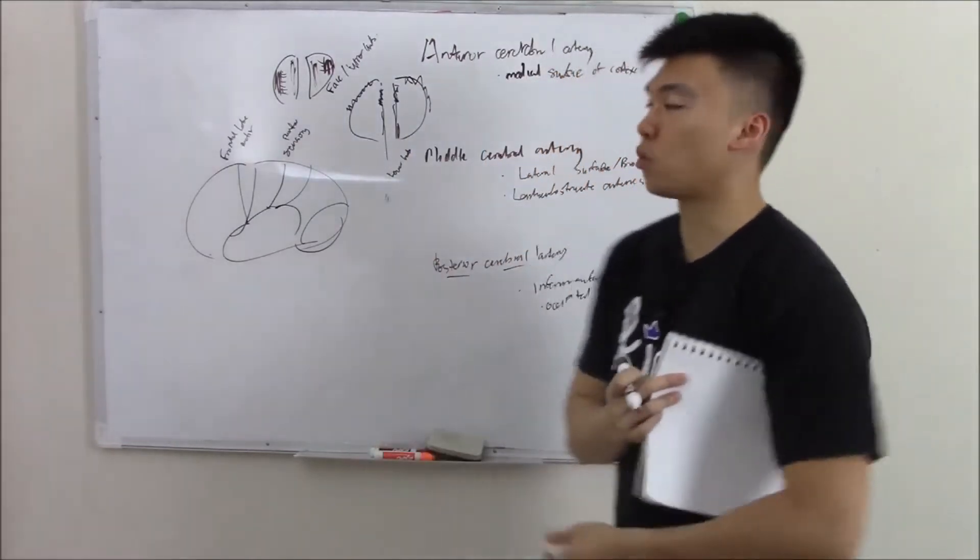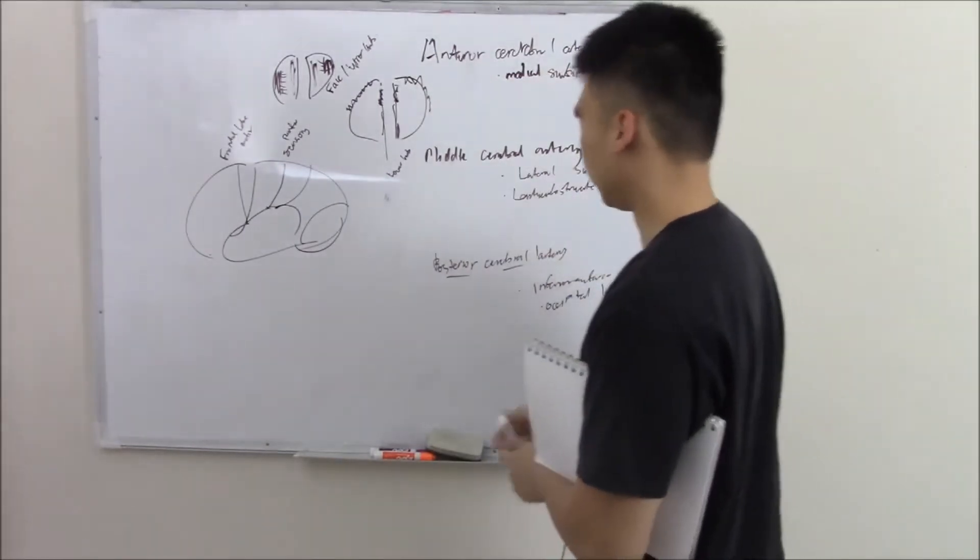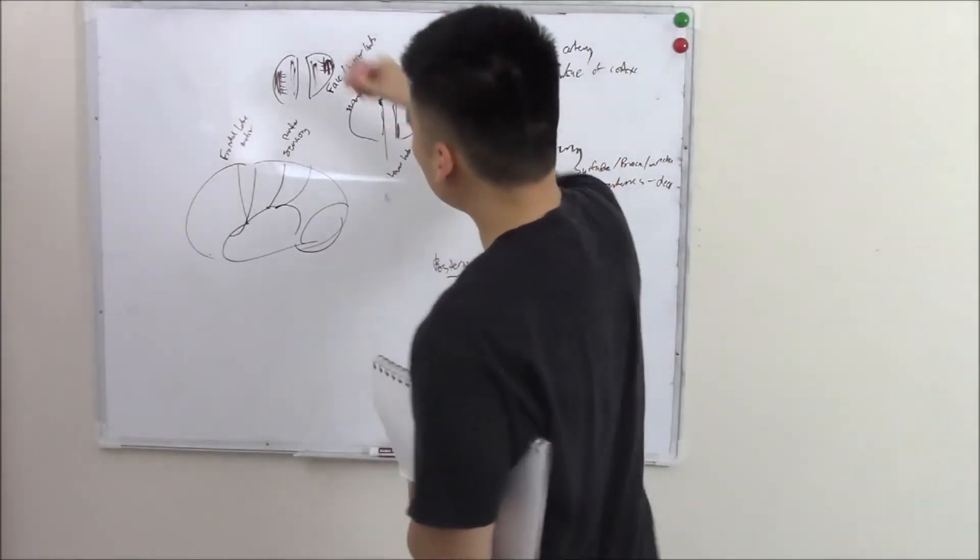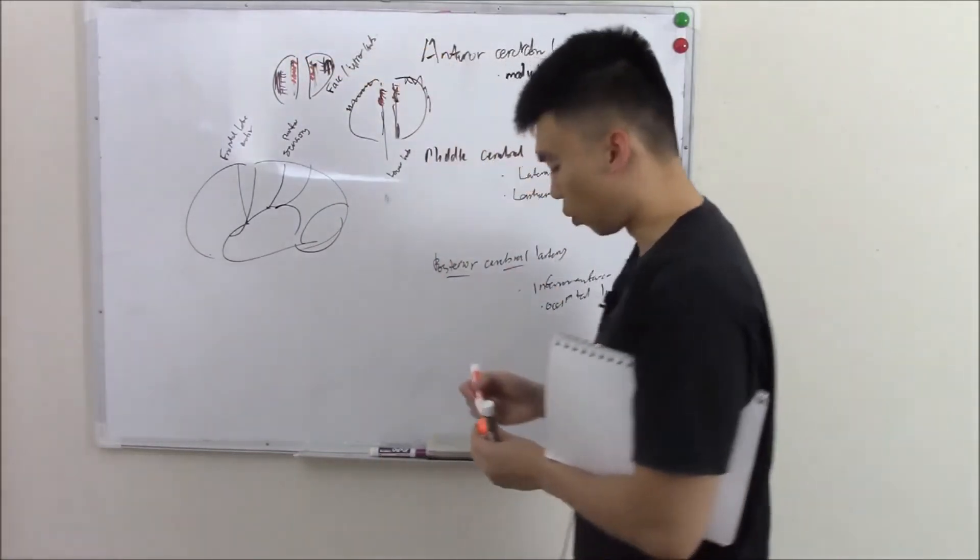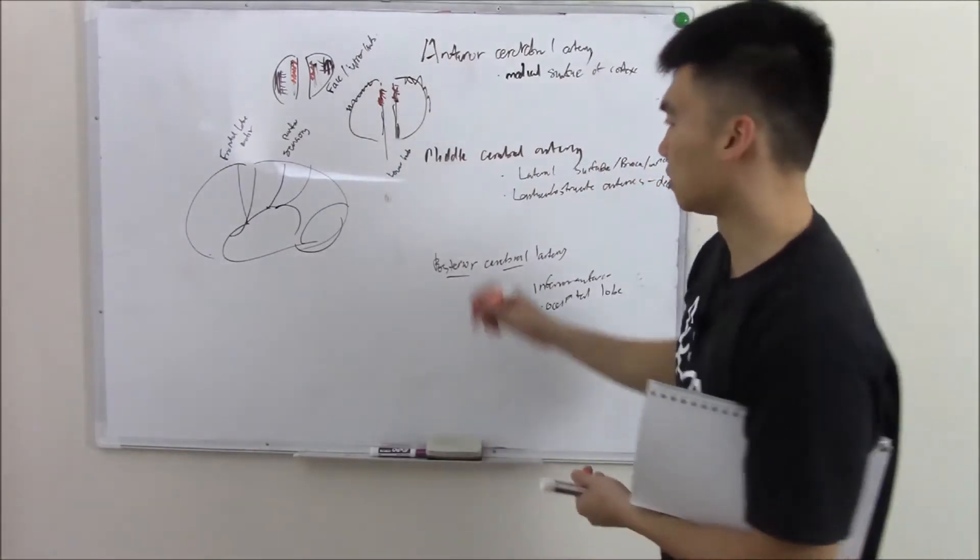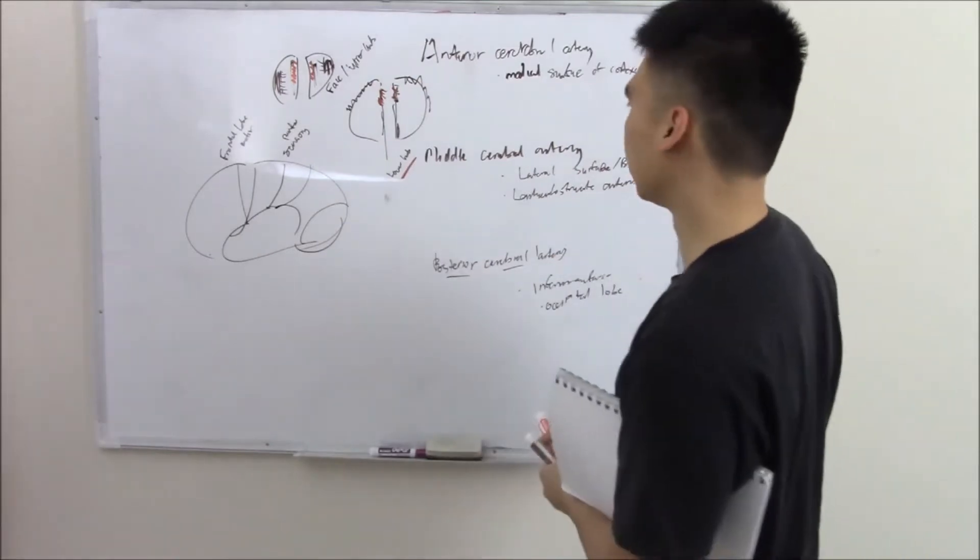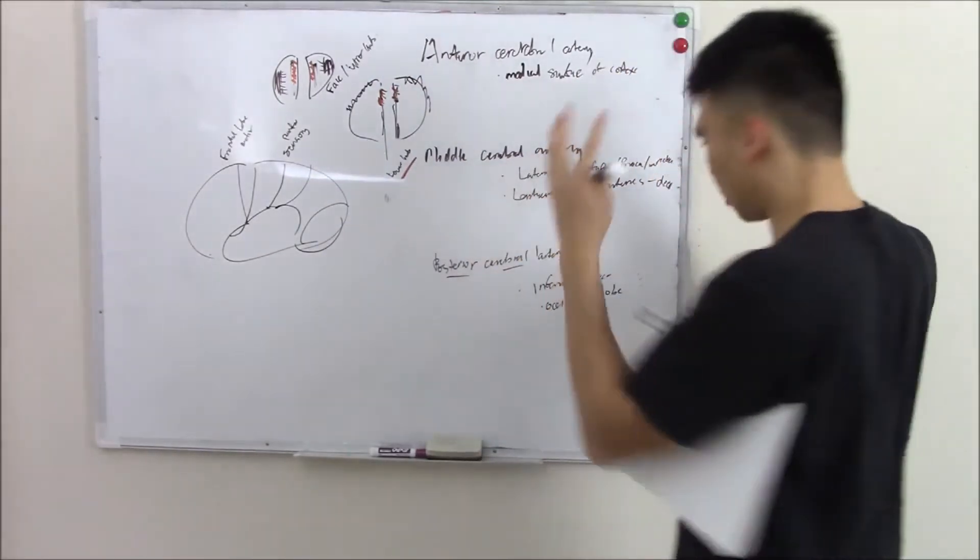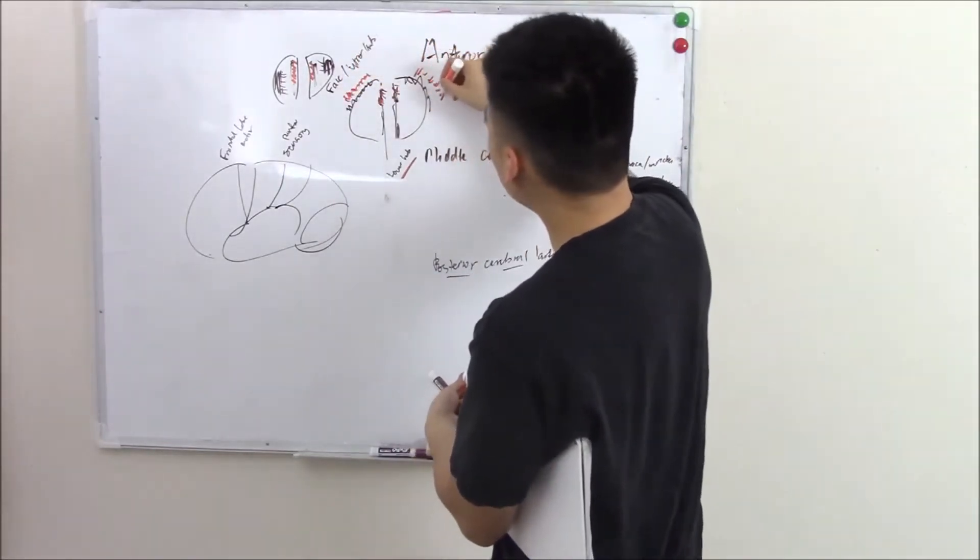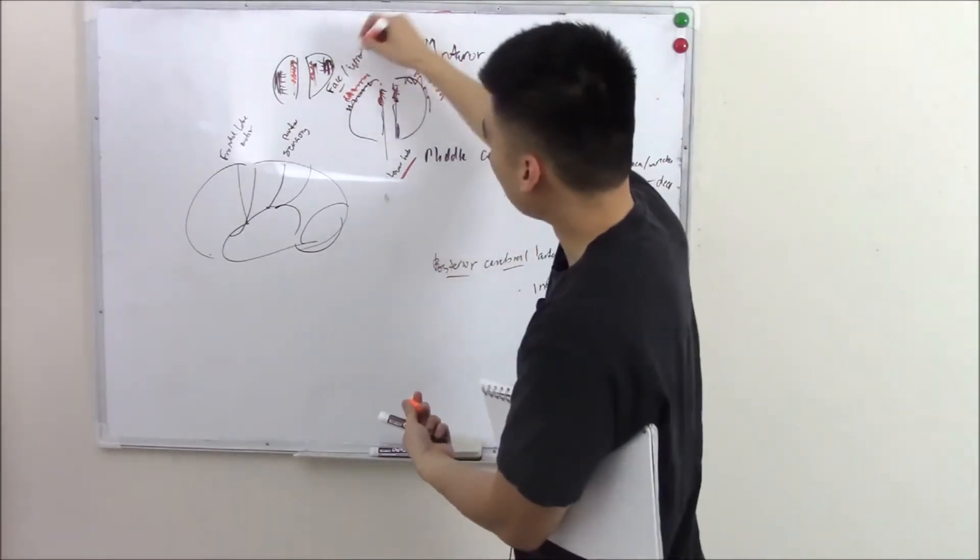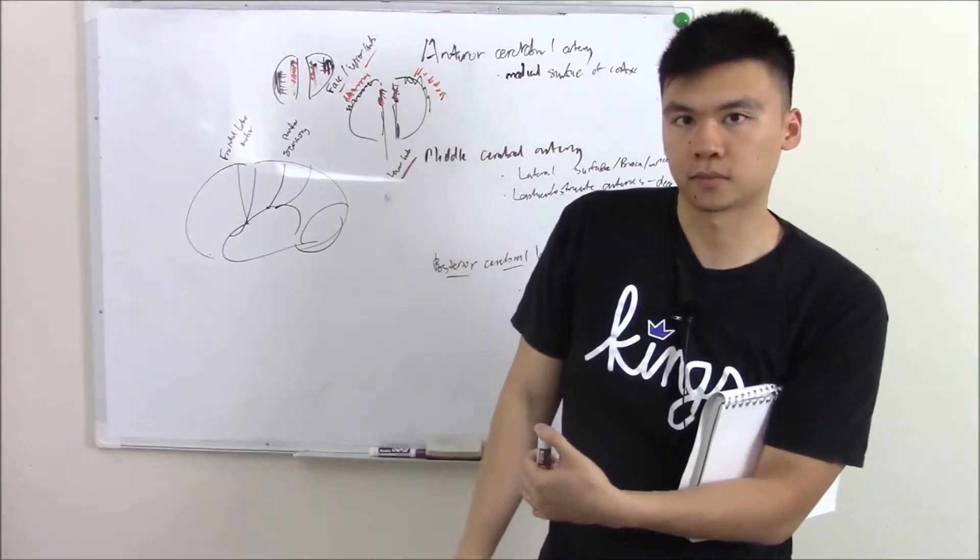This is why it's so important to know what areas these arteries supply. Because if you have a problem with your anterior cerebral artery, then you can't supply that medial part. You don't have blood supply here. And so what kind of deficits would you see? You'll see deficits in your lower limb. So you'll have leg weakness or leg numbness. If something's around your middle cerebral artery, which supplies your lateral surfaces, then you're not gonna have blood supply to your lateral surface. What do you supply? Supplies your face and your upper limb. So you'll have facial droop. You'll have upper limb numbness.